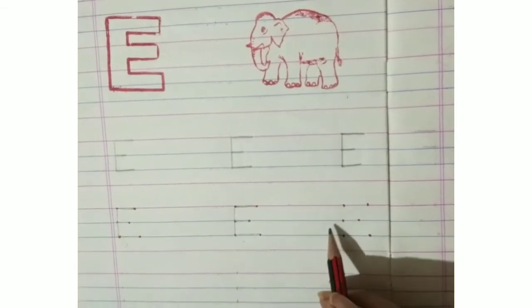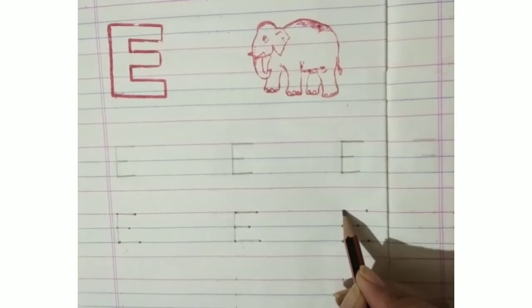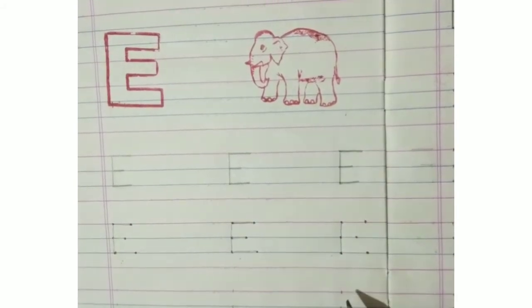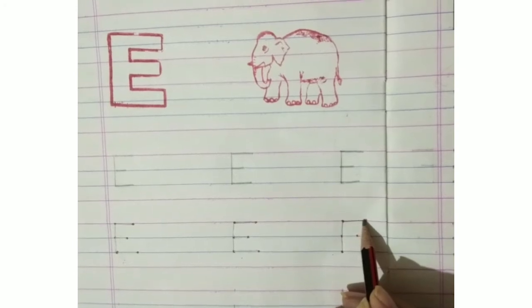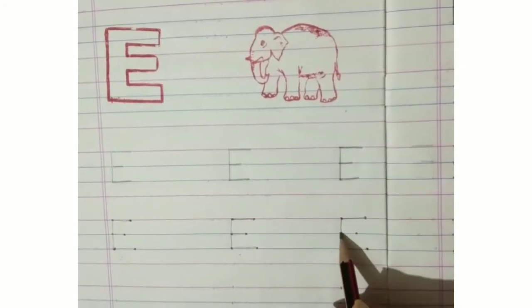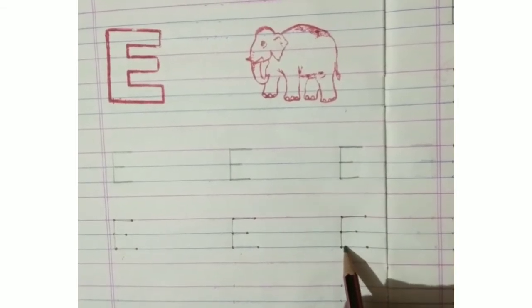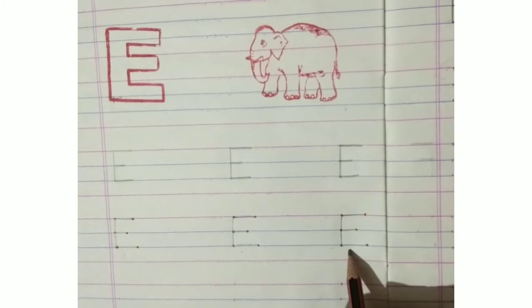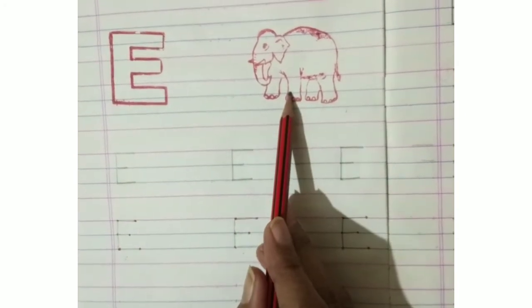Try again. Standing line, up to downwards, sleeping line, sleeping line, again sleeping line. This is your letter E. E for elephant.